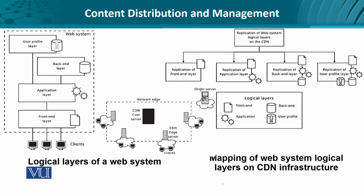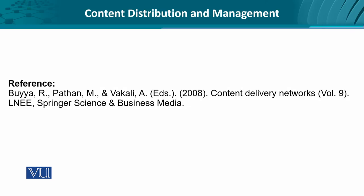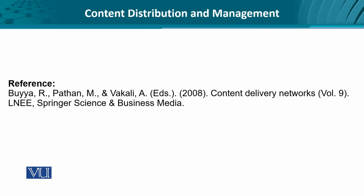From the top, starting from the left-hand side, we have the replication of the front-end layer, replication of the application layer, the backend layer, and user profile layers. Essentially, all the concepts we've discussed are visually represented here. The reference is the book Content Delivery Networks by Rajkumar Bhaiya, 2008.